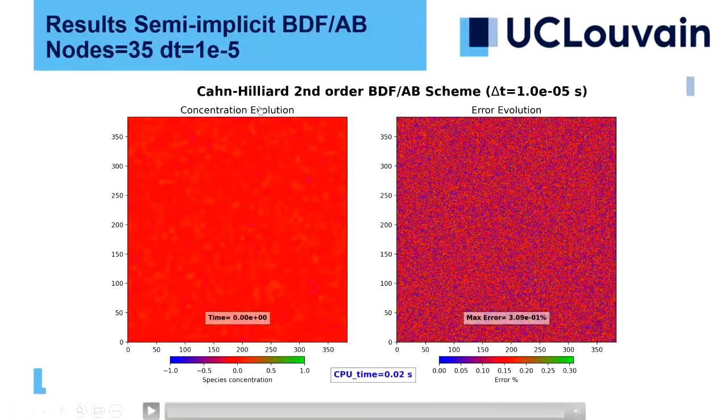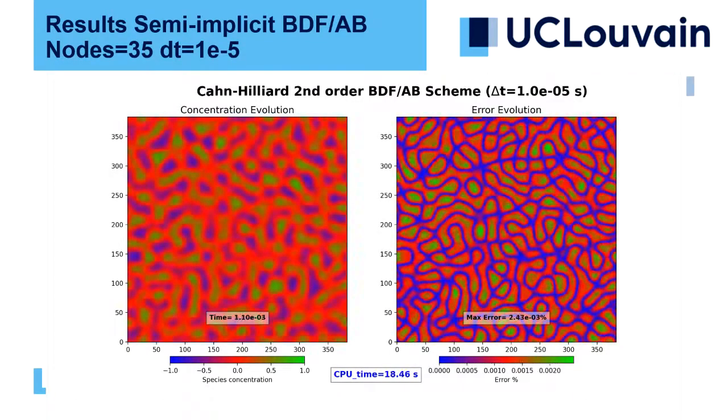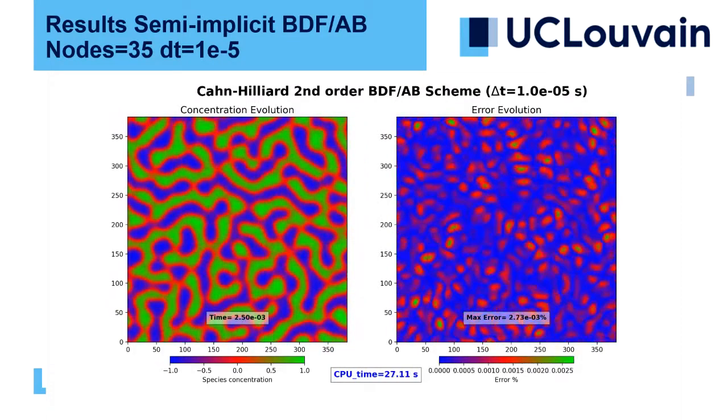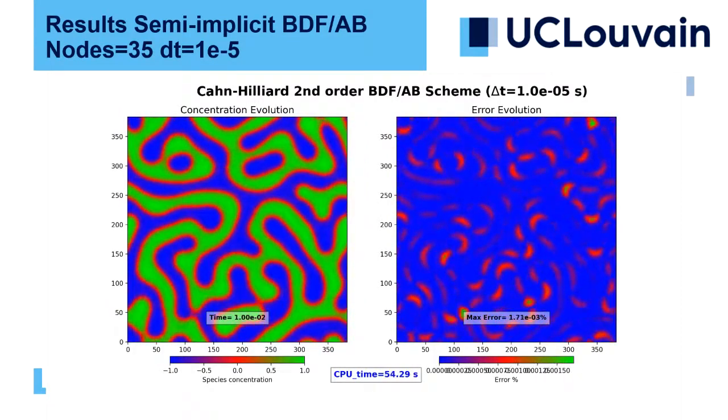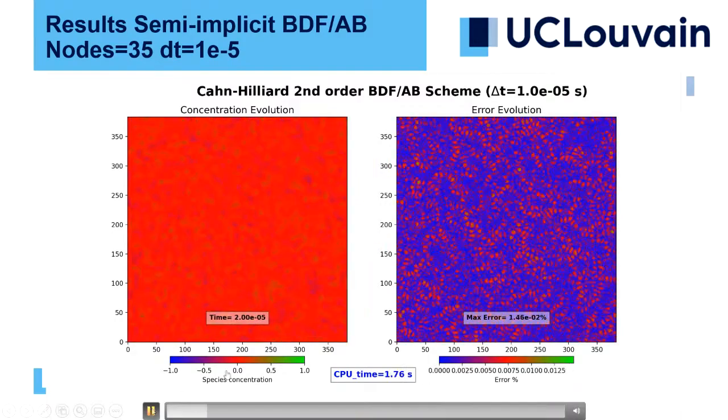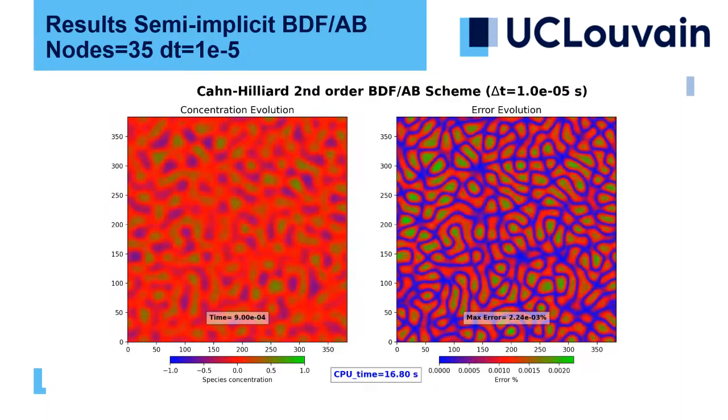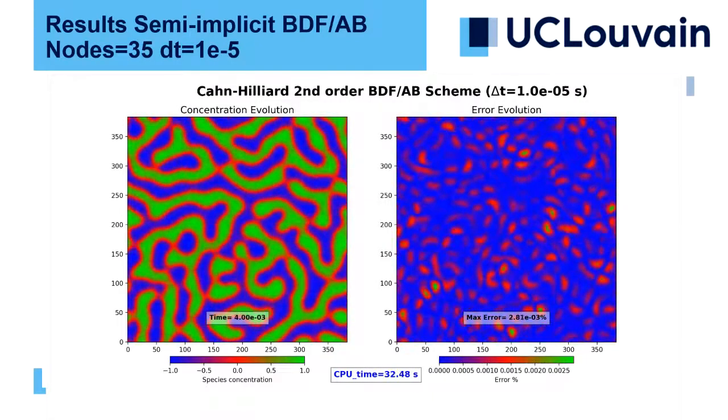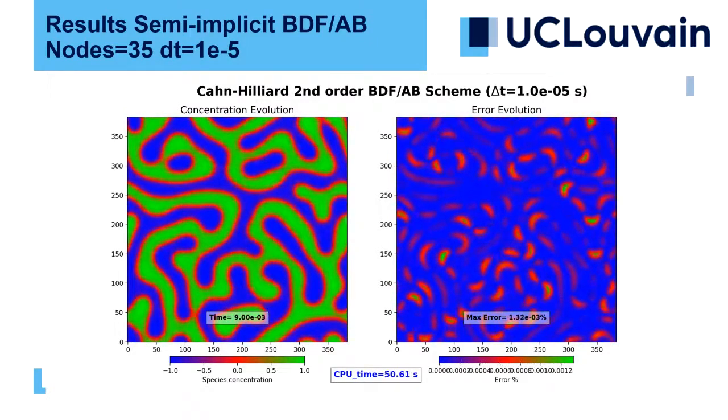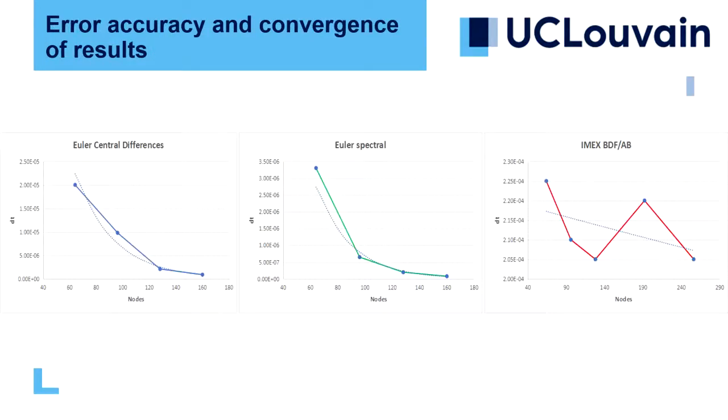From the results of the BDF/AB scheme, as you can see, it's a semi-implicit scheme and it's much more stable than the central difference. In this case, we can actually move up to a large number of nodes, which is 350 plus, and we can use larger time steps to calculate the computation because it's much faster that way. From the CPU time, you can see that it takes a lot less time compared to central differencing. And since we are using FFT2, because we know that Fourier transform is skew symmetric, we can save a lot of time in the space domain by calculating the derivative only for half the nodes.